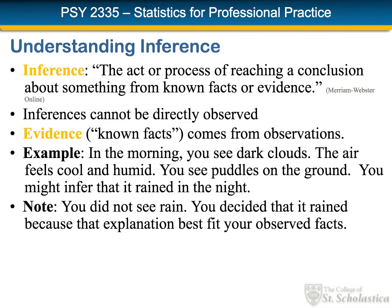To talk about inferential statistics we need to understand exactly what we mean by inference. The dictionary defines it as the act or process of reaching a conclusion about something from known facts or evidence. One of the things we can tell is that inferences cannot be directly observed. We do observe the evidence, and in statistics we use observations that are organized as variables.